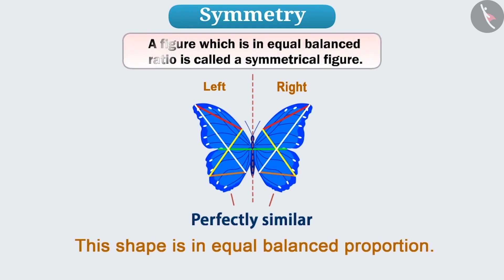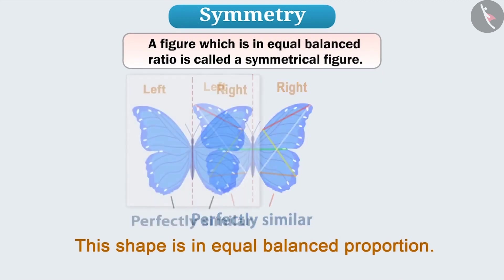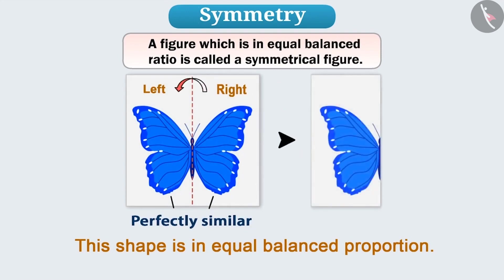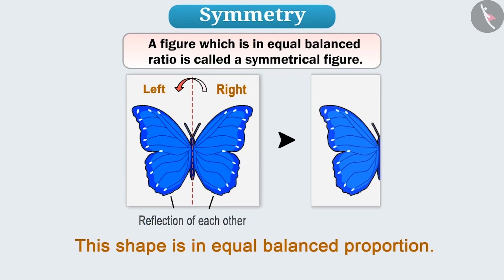A figure which is in equal balanced ratio is called a symmetrical figure. Ordinarily, if we can bend a shape into two parts which cover each other completely, that is, the reflection of each other, then we can say that the shape is symmetrical.